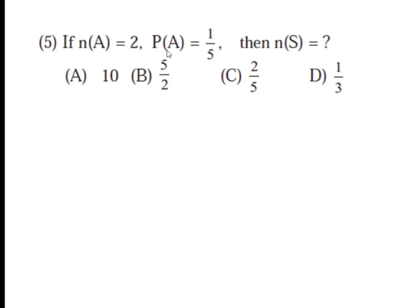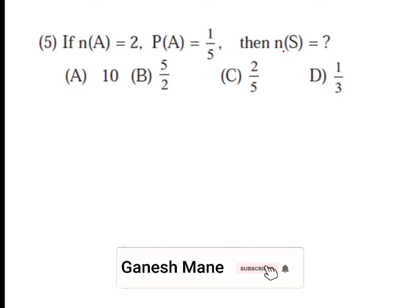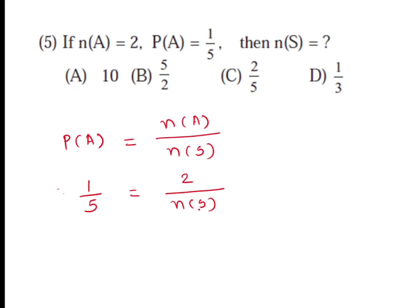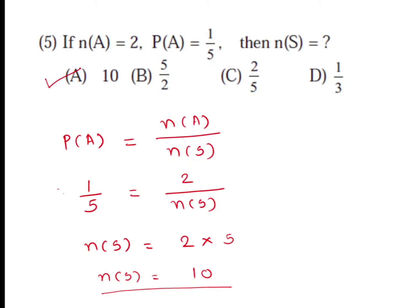Another question: if N(A) = 2 and P(A) = 1/5, what is N(S)? Using the formula P(A) = N(A)/N(S), we substitute: 1/5 = 2/N(S). Rearranging, N(S) = 2 × 5 = 10. So there are 10 sample points in the sample space, which is given at option A. Option A is the correct alternative.